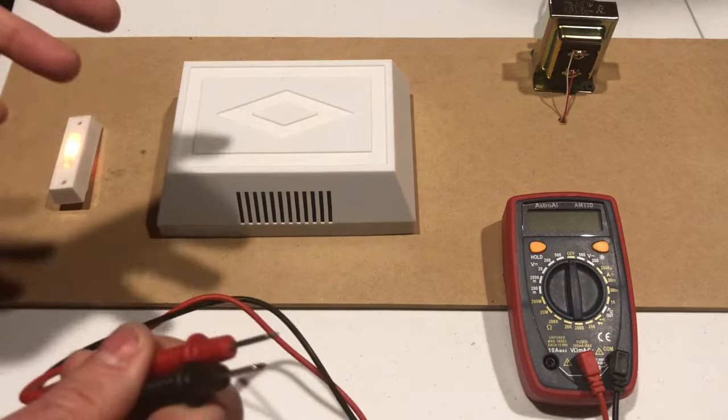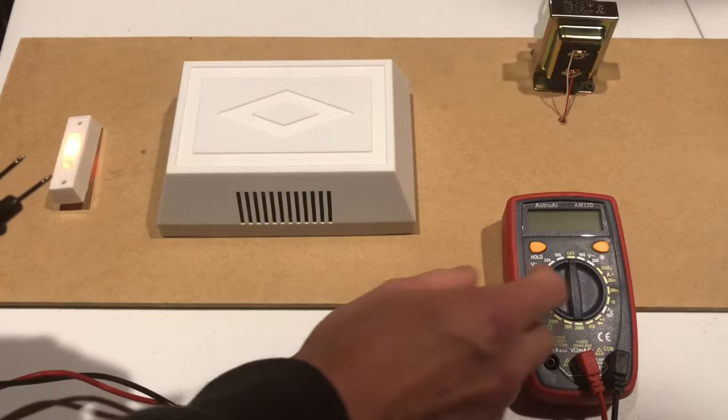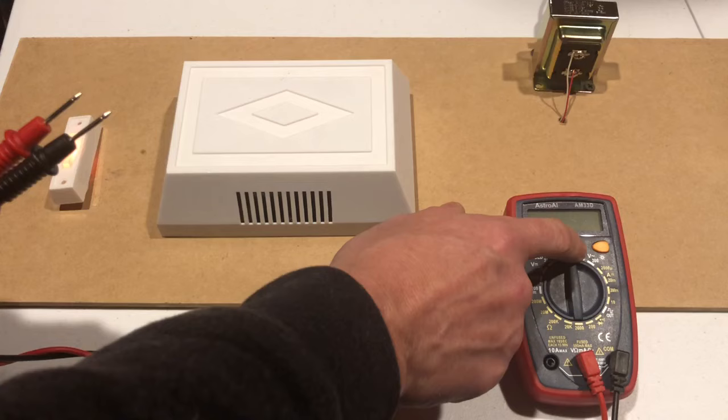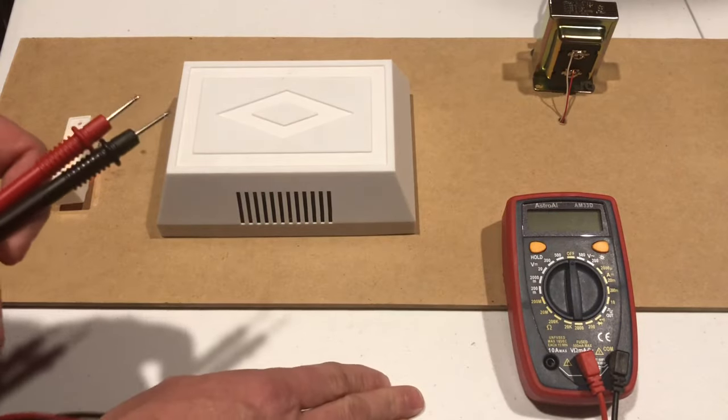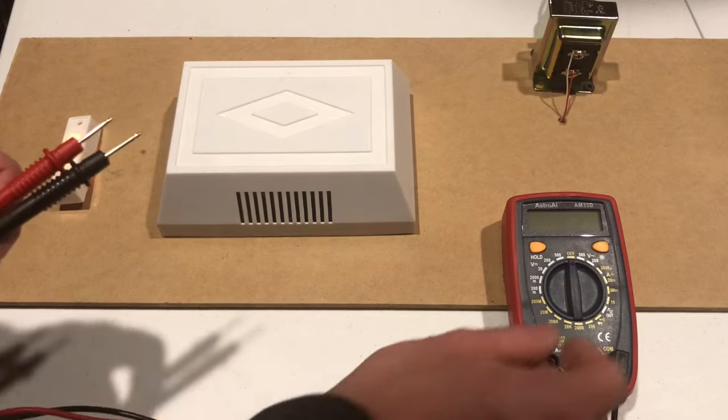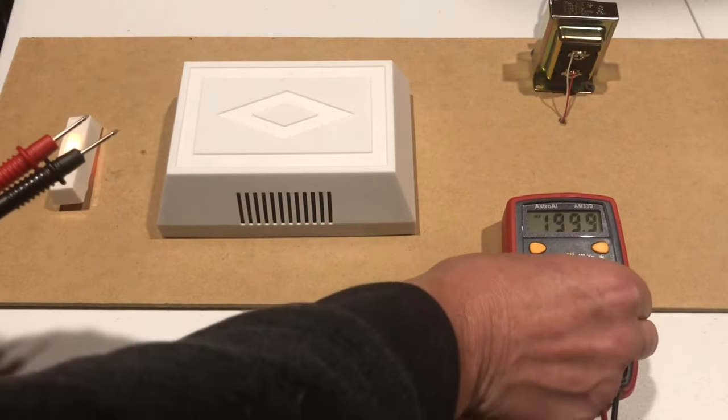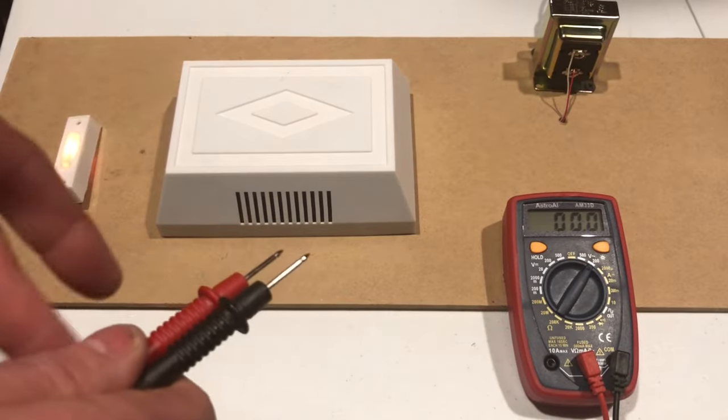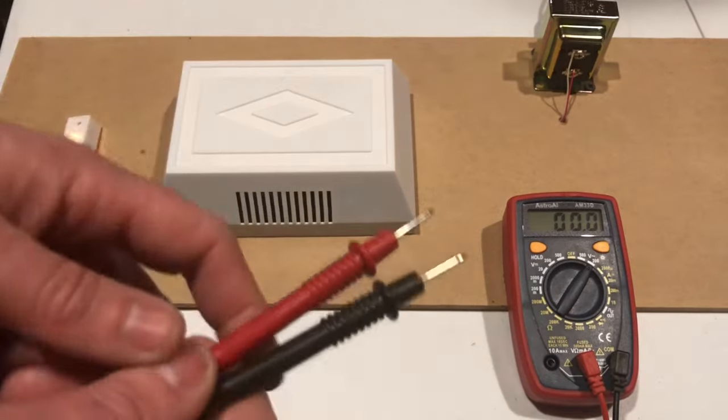And let's start by testing the transformer. So you want to flip this dial to AC, and there's a V. I don't know if you can see there's a little wave. That's the symbol for AC. So we're going to turn this to 200. It only has two settings. And since it's low voltage, we want to put it on the 200 on this particular meter.